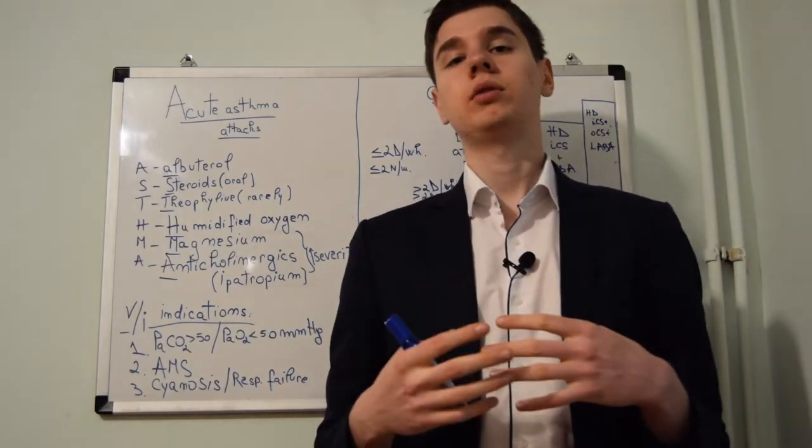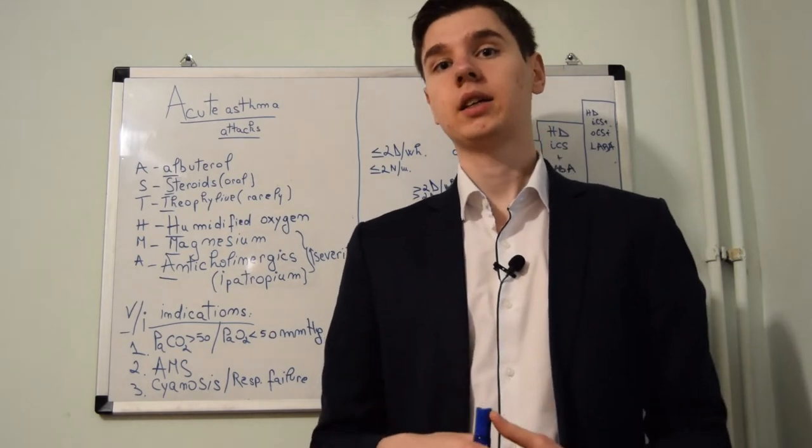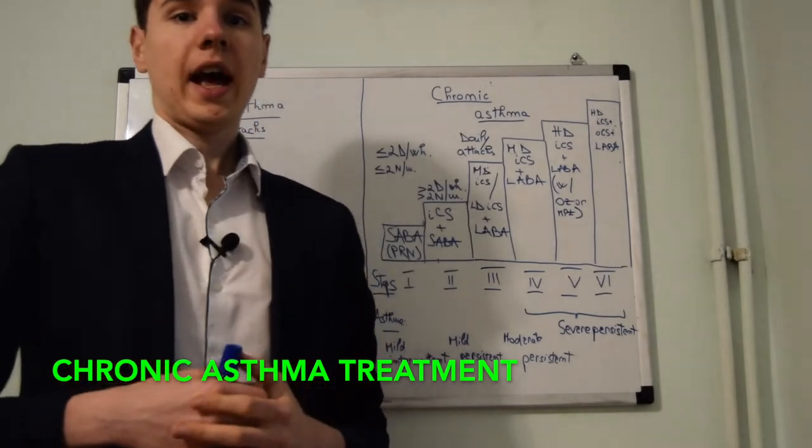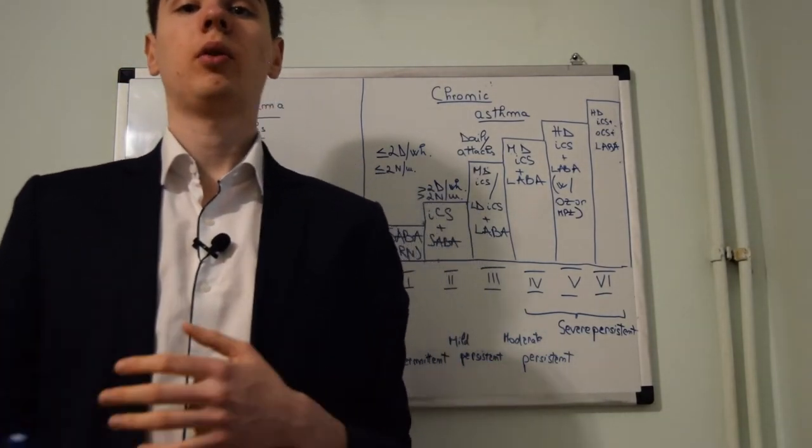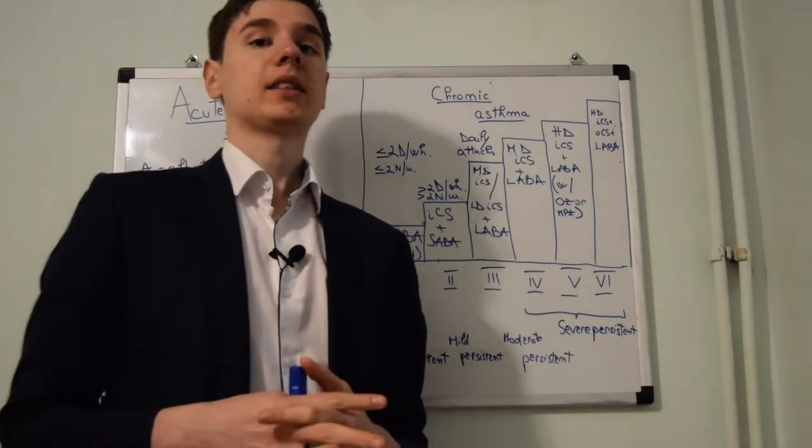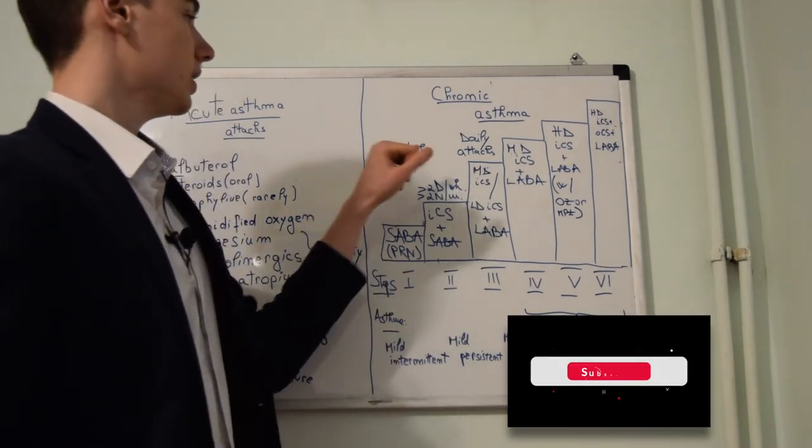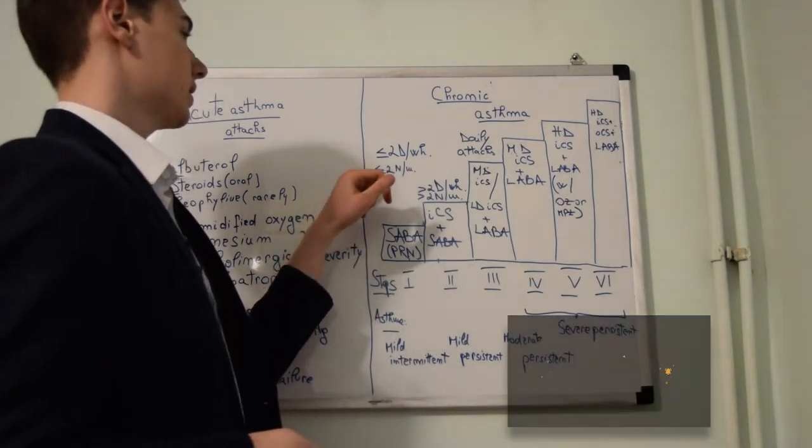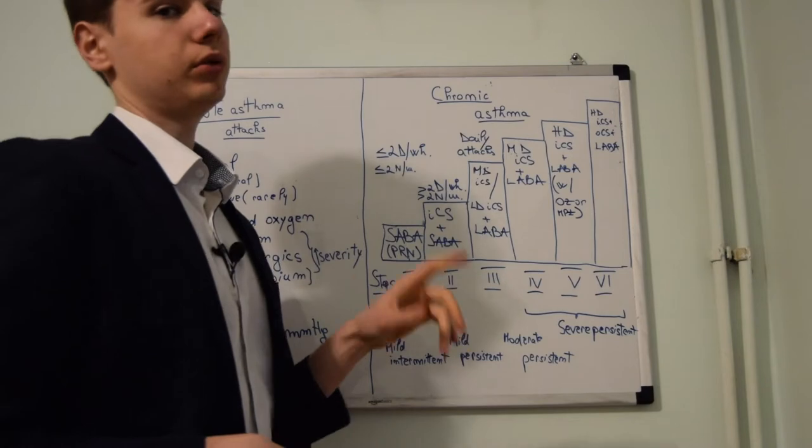Now that you understand how to treat the acute asthma attack, let's go to chronic management of asthma. The chronic asthma management is dependent upon the type of asthma we are dealing with. Mild intermittent asthma is defined by less than two days per week of asthma attacks or less than two nighttime asthmatic attacks during a month.